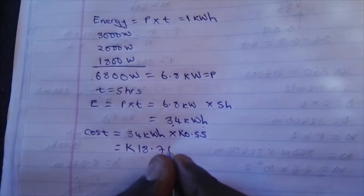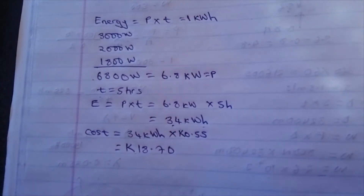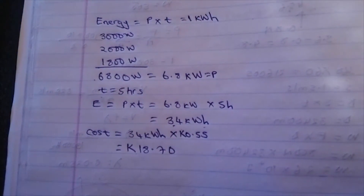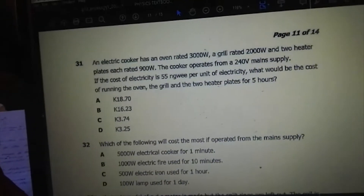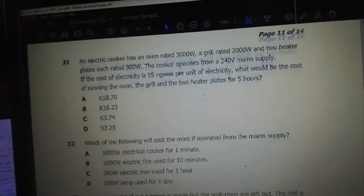That's 18.70 kwacha — 18 kwacha 70 ngwe. So the answer is A: 18 kwacha 70 ngwe.